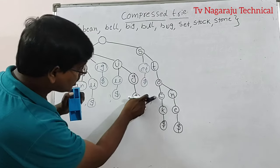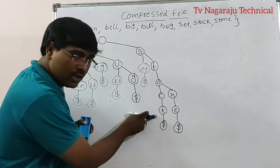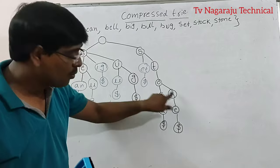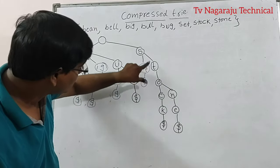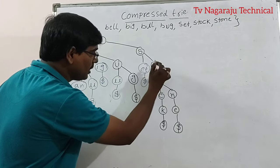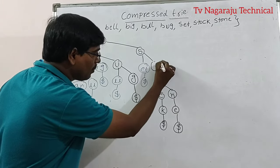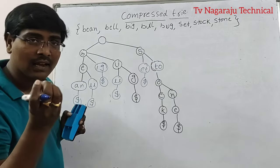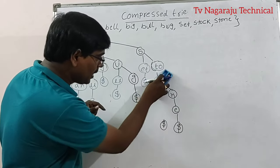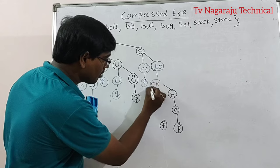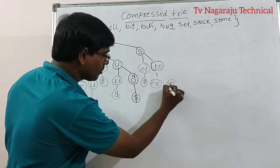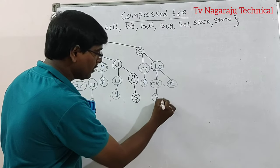For stock: C and K are possible to combine. For stone: N and E are also possible to combine. T and O are combined as T-O (common prefix shared by stock and stone). So we have: S → T-O → C-K with dollar, and T-O → N-E with dollar. This is the compressed trie.